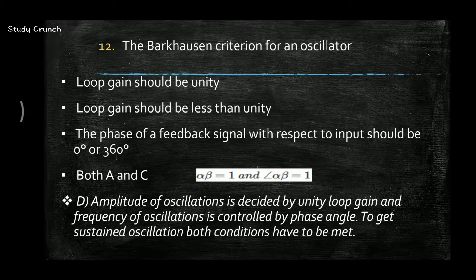Next, the Barkhausen criteria for an oscillator is: loop gain should be unity, and the phase of a feedback signal with respect to input should be 0 degree or 360 degrees. So the answer is D, i.e. both A and C are the requirements of Barkhausen criteria.